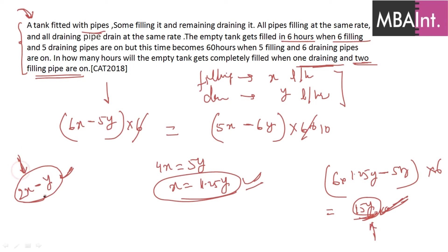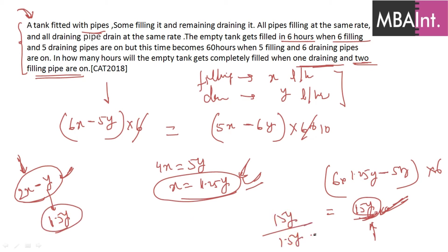Converting to y terms using x = 1.25y: net rate = 2 × 1.25y − y = 2.5y − y = 1.5y. Time = 15y ÷ 1.5y = 10 hours. So one draining pipe and two filling pipes will fill the tank in 10 hours. Both questions used the same core concept — just pipes instead of humans and robots.